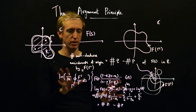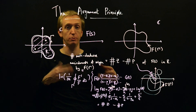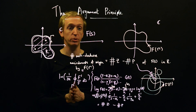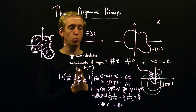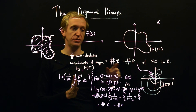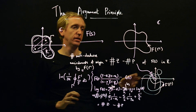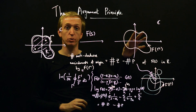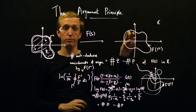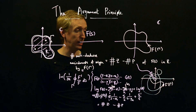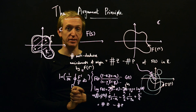And there we have it — a quick derivation of the argument principle, and more importantly an explanation for why it holds. It gives a way to relate the number of zeros and poles in some region R to the number of encirclements made by the output of the function of the origin. Now we're going to use this to derive the Nyquist criterion.